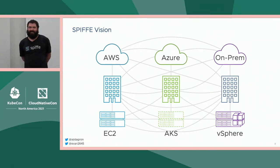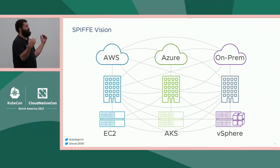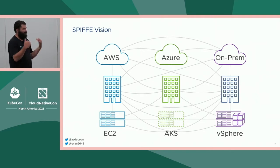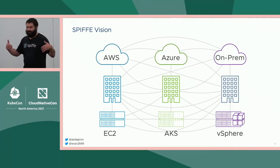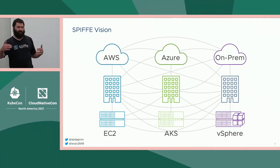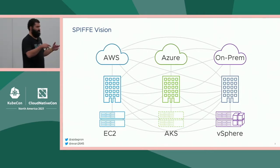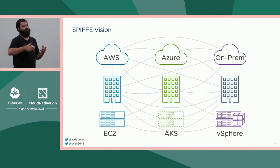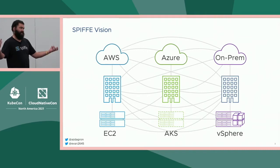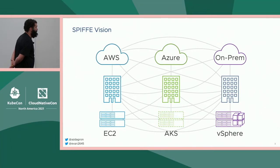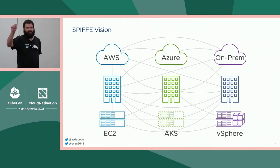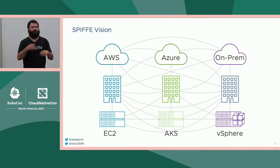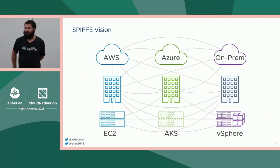SPIFFE is an attempt to say: let's do a scheme that is platform agnostic, not anchored to a particular technology or provider. If we can provide a stable notion of identity and a way to prove identity across these boundaries, then everything above it starts to stabilize too. Security policy stabilizes because you have a stable identifier you can reference. Tracing, observability, debugging — all these things stabilize. Once you have a stable, platform-agnostic identifier, a lot of other things get easier as you jump across different verticals.